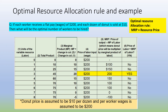Now let's look at a second example using similar data but with wages of $200 per worker and a donut price of $10 per dozen. Here the optimal hiring is three workers, because the third worker's marginal product is 20 dozens, giving an MRP of $200 — that is 20 times $10 — which equals the wage of $200. So wages of $200 equal the MRP of $200 at this hiring level, making three workers the optimal resource allocation.